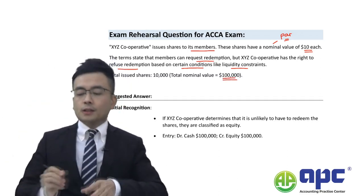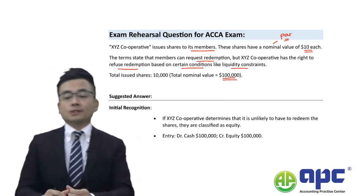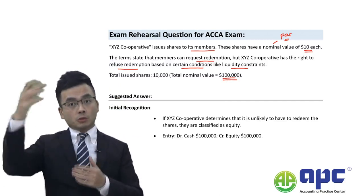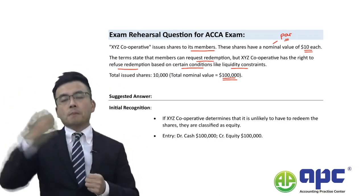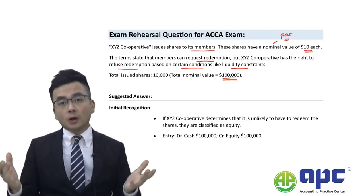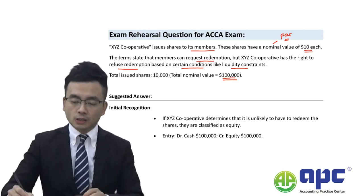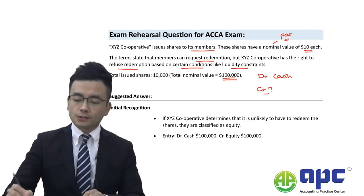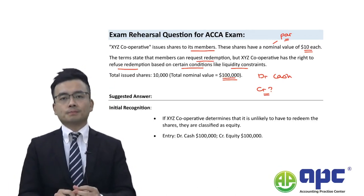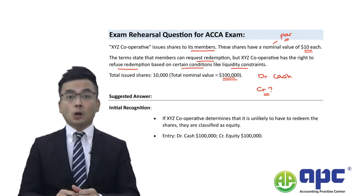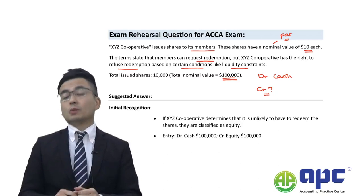Let's say that the total shares issued to members means the cooperative gets $100,000 from its members. An increase in cash would certainly need a debit to cash. However, we need to think about the credit side — where does it go? Do we credit financial liability, meaning we owe something to the members, or equity, meaning we do not owe anything to the members?